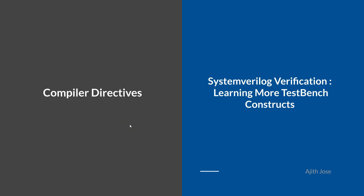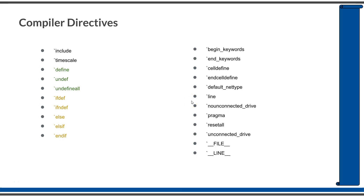Compiler directives in SystemVerilog are a way to pass instructions to the compiler so that you can make your code more reusable across different hierarchies and different files. Here is a list of all compiler directives in SystemVerilog. The ones on the left-hand side are quite commonly used, and the ones on the right-hand side are not commonly used. We will quickly see the use cases of these compiler directives.